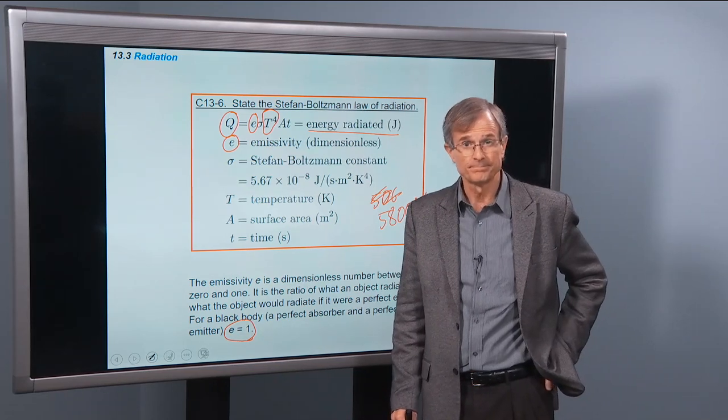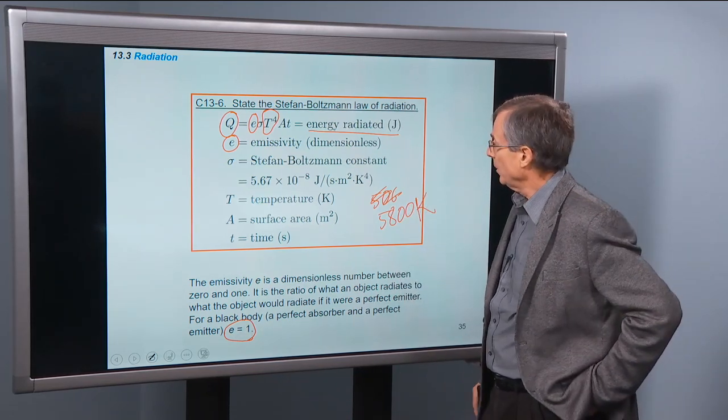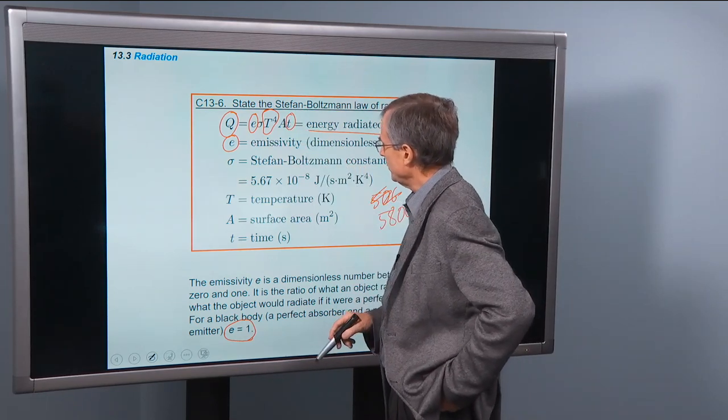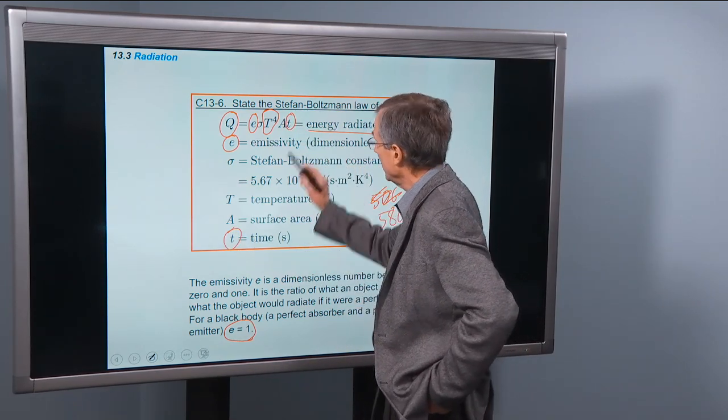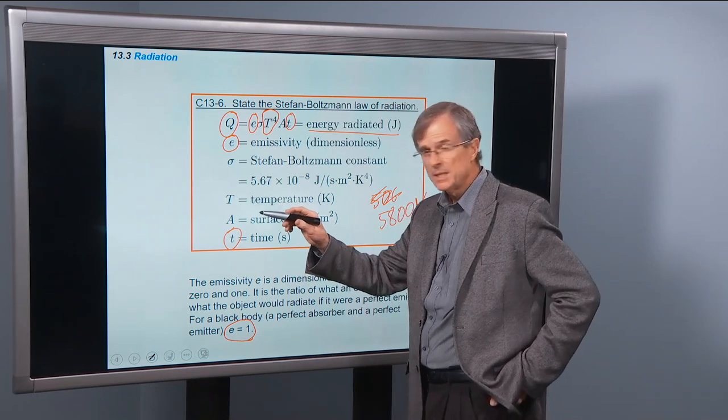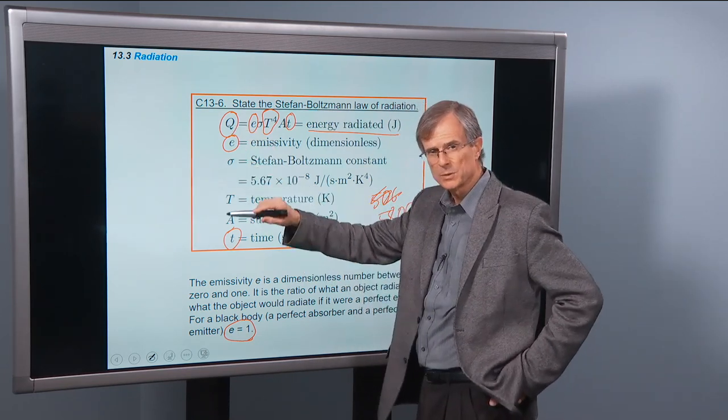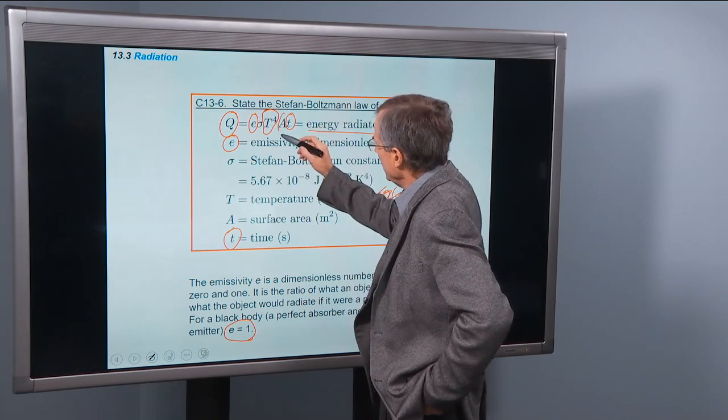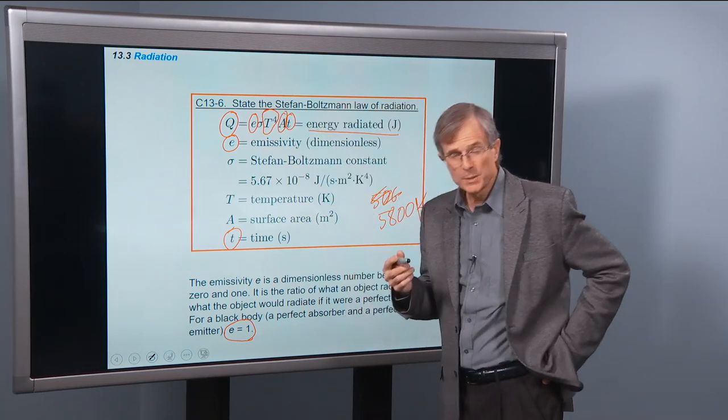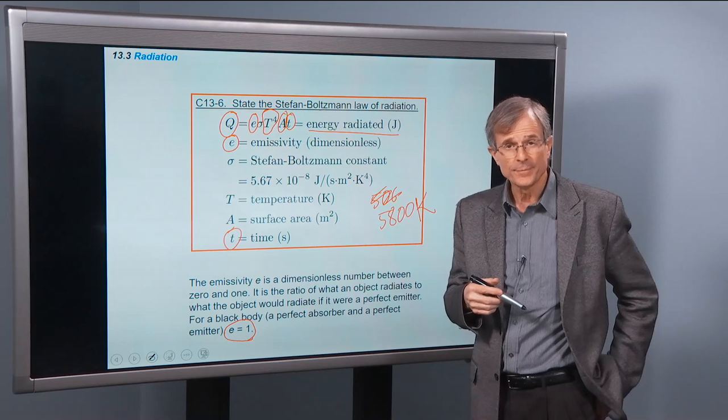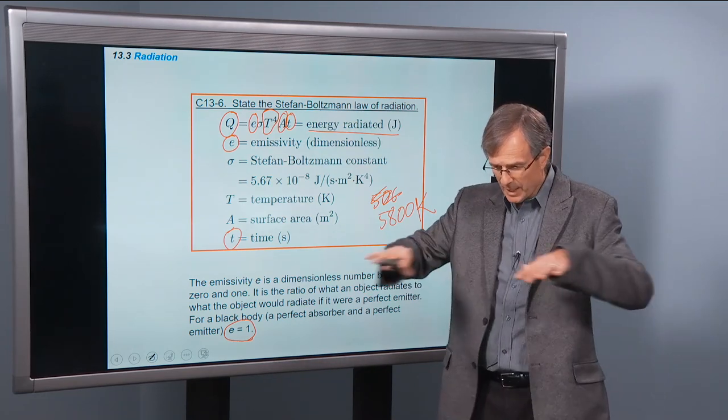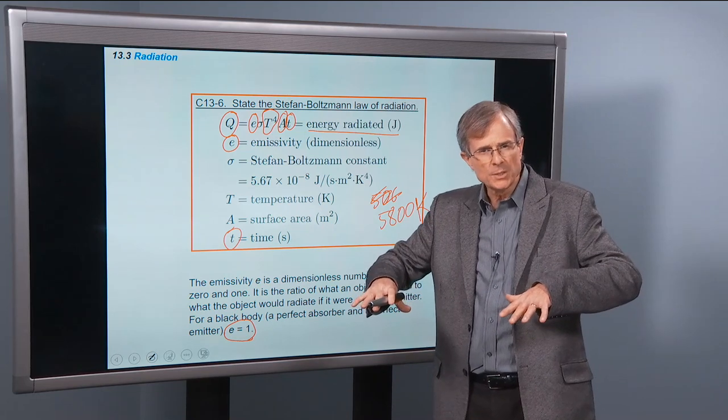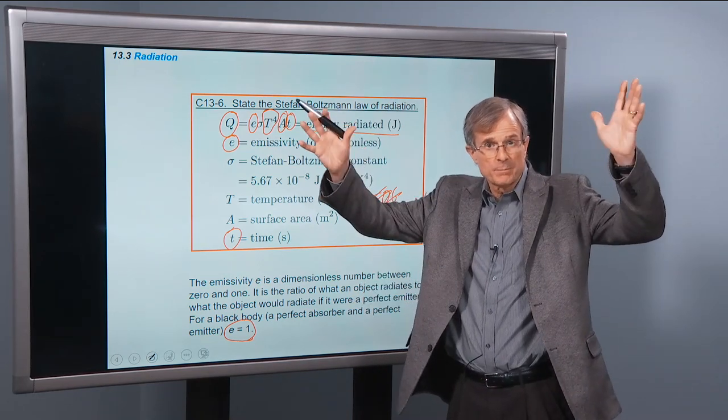A watt is a joule per second. So if you take this time, this is the amount of energy radiated for the amount of time. If you divide both sides by T, then you have a joule per second which is a watt. The amount of energy radiated is proportional to the area. That might make sense to you. The bigger the area that's at a particular temperature, the more energy it's going to radiate out into space.